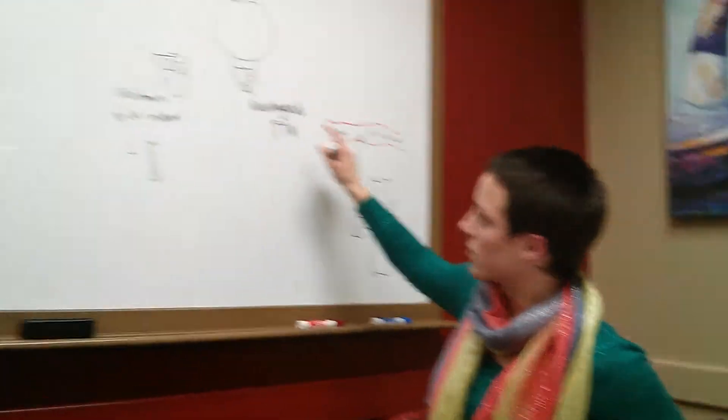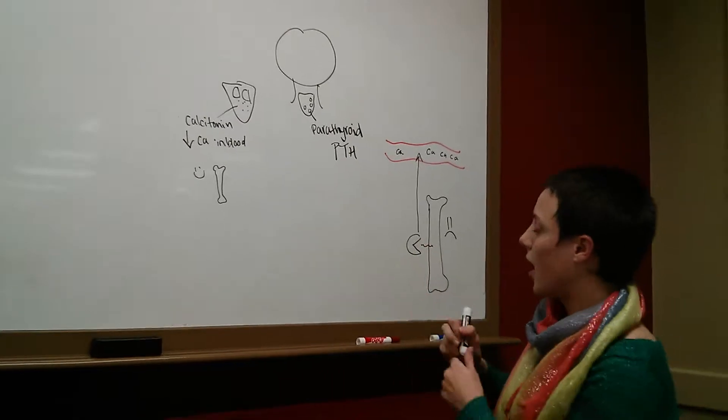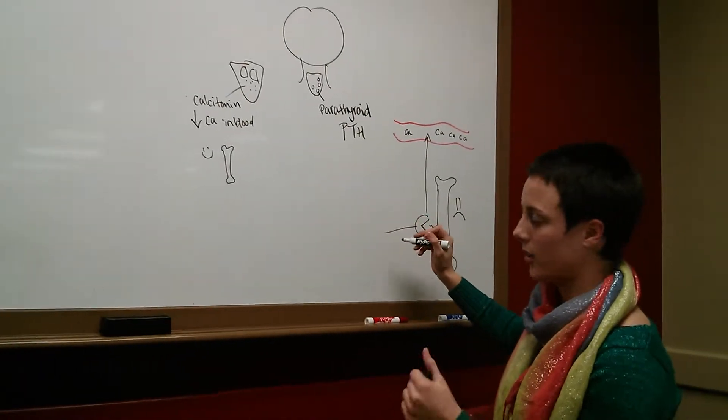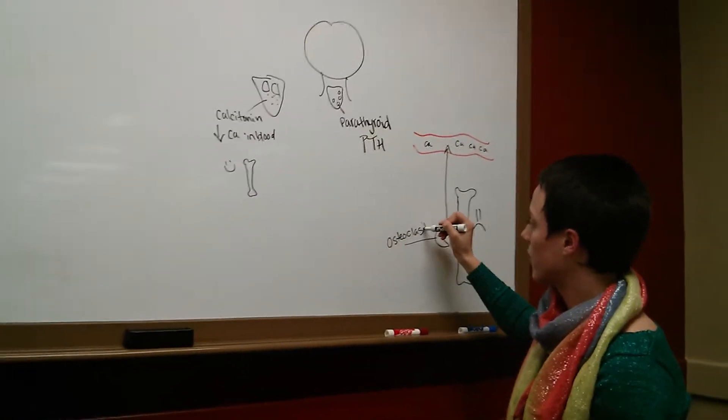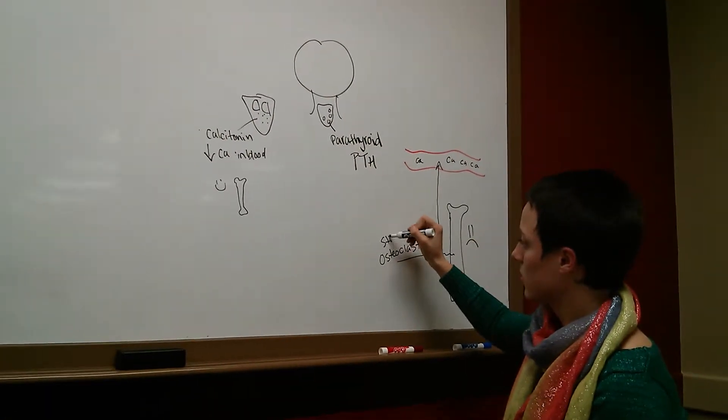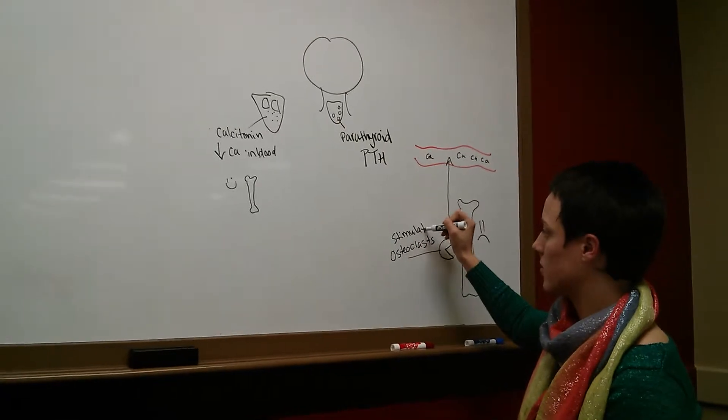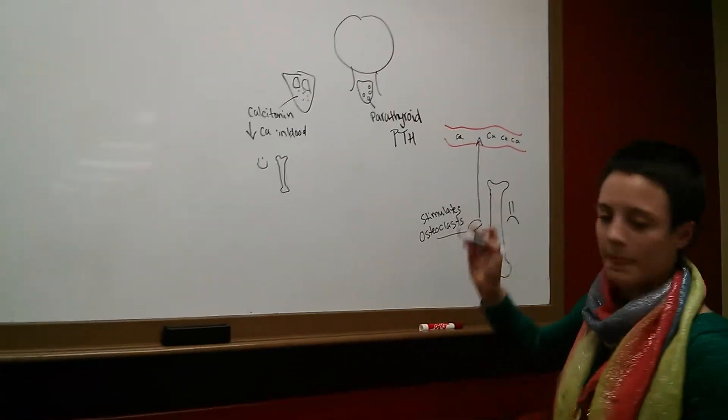Alright. So, so far we've learned that the parathyroid stimulates osteoclast activity, right? Because it has to get this calcium from somewhere. So, stimulates osteoclasts. Stimulates means that it tells it to go and do it.